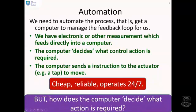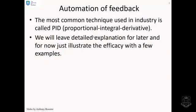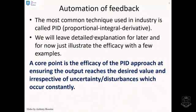However, there is one issue. How does the computer decide what action is required? We as humans have had years and years of experience and we sort of know what to do, but we have to unpick that and tell the computer exactly how to make these decisions. The most common technique used in industry is called PID, which stands for proportional, integral and derivative. We will leave a detailed explanation for later. For now, we're just going to illustrate how effective this strategy is, ensuring the output reaches the desired value irrespective of uncertainty and disturbances, which constantly occur in real life.